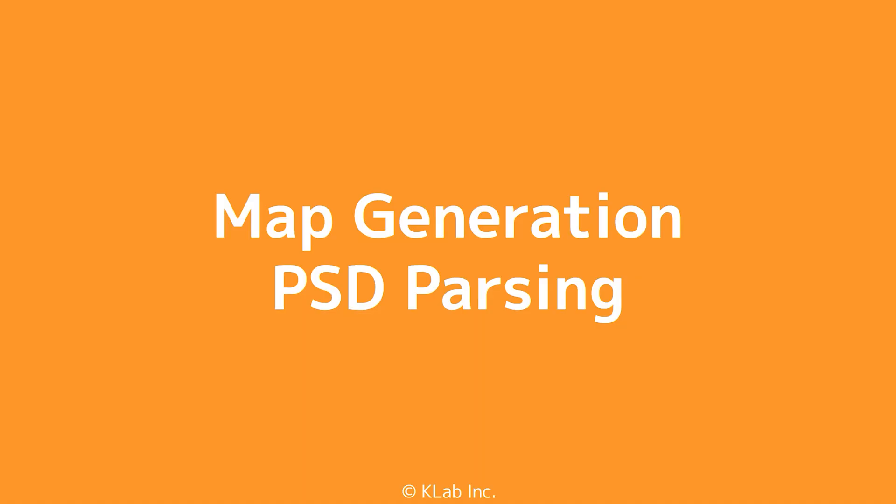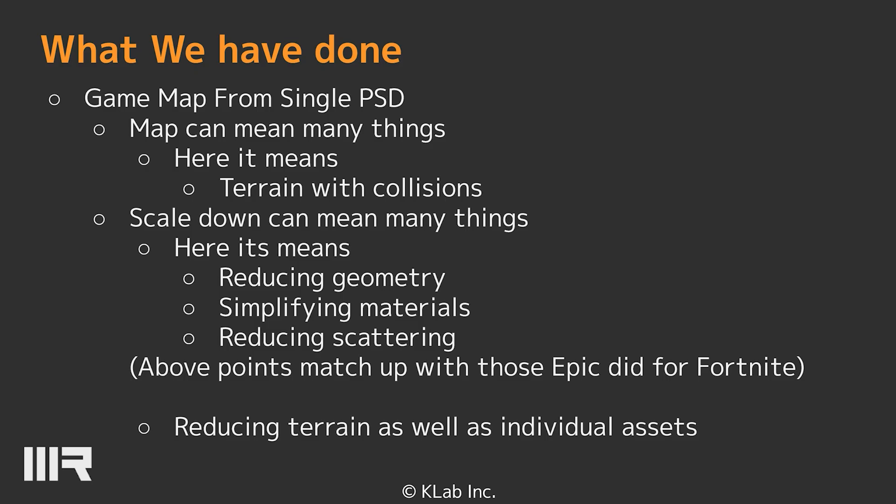The first step is map generation PSD parsing. We took the elements necessary for an action game where the map is built from above and automatically create and optimize them. To create a map, not only the terrain but also the collision that matches the terrain is generated. After generating the terrain, we have made it possible to reduce geometry, simplify materials, and reduce individual scatter models.